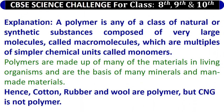Explanation: a polymer is any of a class of natural or synthetic substances composed of very large molecules called macromolecules, which are multiples of simpler chemical units called monomers. Polymers are made up of many of the materials in living organisms and are the basis of many minerals and man-made materials. Hence, cotton, rubber, and wool are polymers, but CNG is not a polymer.